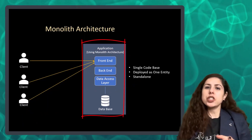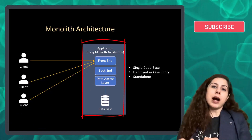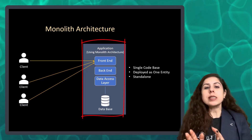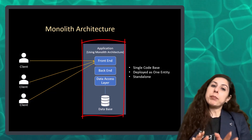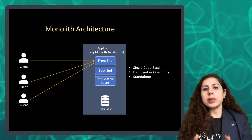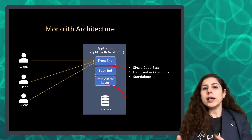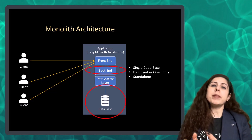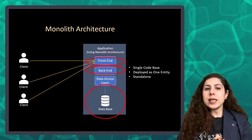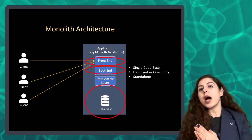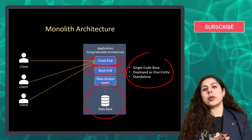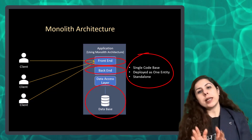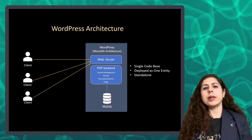For example, a web application can be considered monolithic architecture if all front-end, back-end, and data storage is written together in a single code base and deployed together. It might be possible that there are different processes involved, like a separate process for the database and web server. Also, the front-end will be accessed using a browser, but it is still considered monolithic architecture because all of its components are interconnected and managed as a single code base and deployed together.